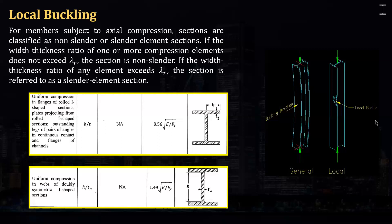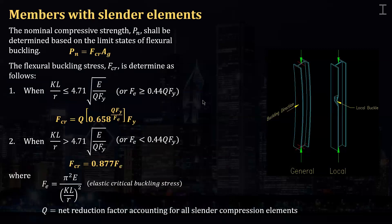That means it will experience local buckling — local instability. It will experience local buckling before general buckling. Based on NSCP 2015 and AISC, the nominal compressive strength Pn shall be determined based on the limit state of flexural buckling, where Pn = FCR × Ag, and the flexural buckling stress FCR is determined as follows, with a reduction factor Q included.